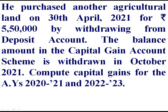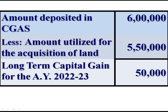During April 2021, that is in the previous year 2021-22, he purchased another agriculture land for Rs 5,50,000 by withdrawing from the deposit account. We had deposited Rs 6 lakh in the Capital Gain Account Scheme, which was allowed as an exemption. Out of this Rs 6 lakh, he utilised Rs 5,50,000, and there is a balance of Rs 50,000 that is taxable as long-term capital gain for the assessment year 2022-23.